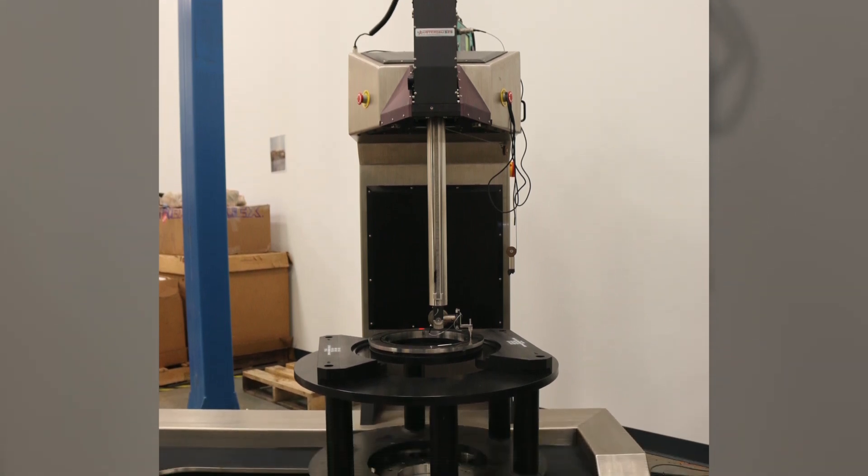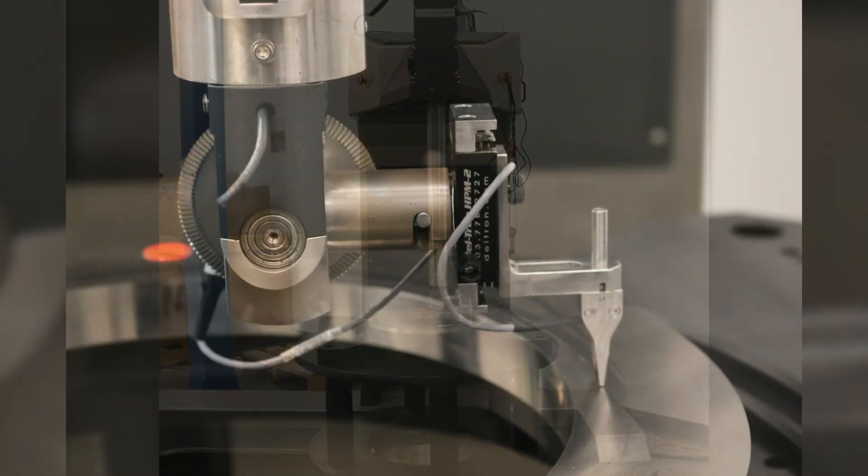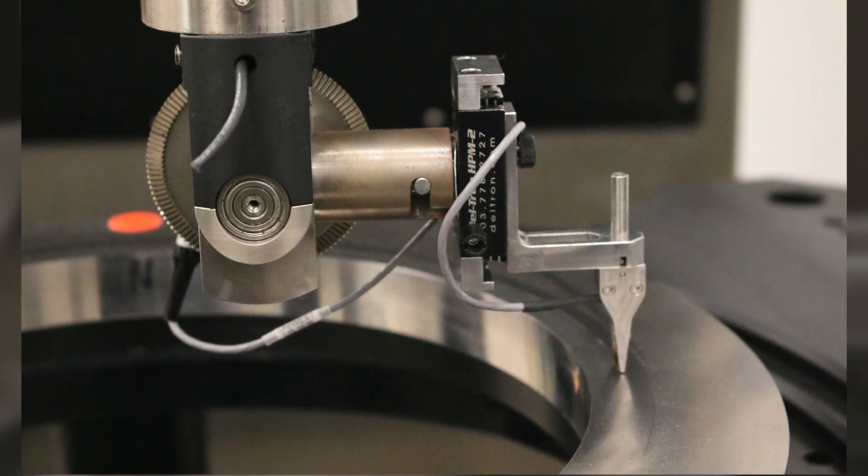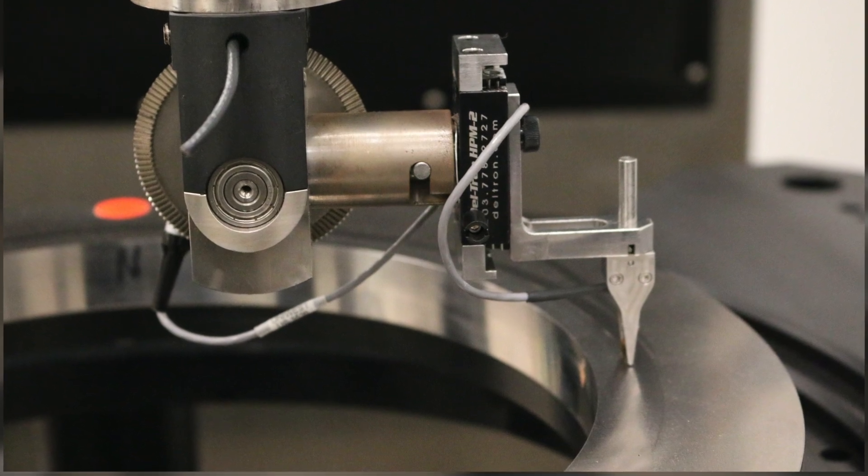Eddy Current is primarily used here at Element for the inspection of finished machine components. However, it can also be used for inspection of overhaul and repair operations and as a method of determining coating thickness.